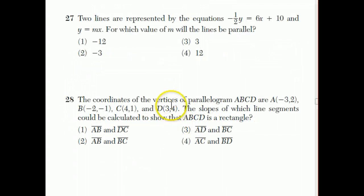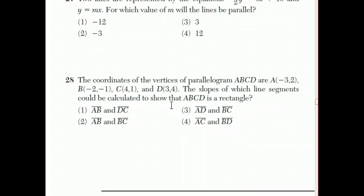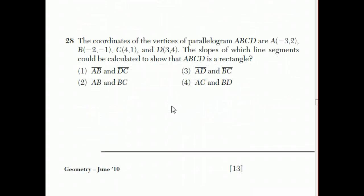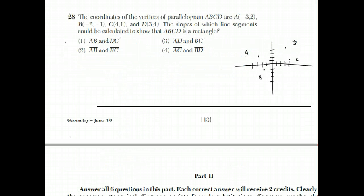Question number 28. The coordinates of the vertices of parallelogram ABCD. The slopes of which line segments could be calculated to show that ABCD is a rectangle? Well, we're already told that the thing is a parallelogram. So what makes a parallelogram different from a rectangle is that not only are the opposite sides parallel and congruent, but there's also adjacent sides that are perpendicular.